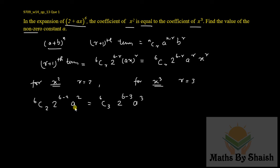Since a is non-zero, these two will cancel and we will be left with only one a. Then we are left with 6C2, which is 15 × 2⁴, over 6C3, which is 20 × 2³.